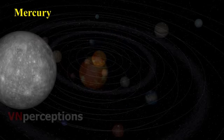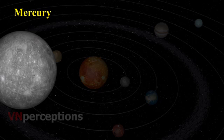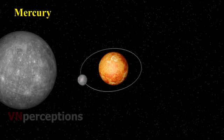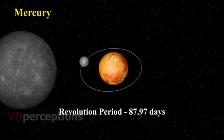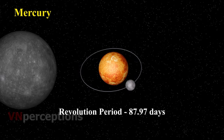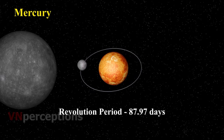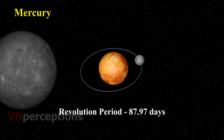Beginning with the first planet, that is Mercury. The planet Mercury is the nearest to the sun. It is the smallest planet of our solar system. Its orbit around the sun takes only 87.97 days, the shortest of all the planets in the solar system. Because Mercury is very close to the sun, it is very difficult to observe it as most of the time it is hidden in the glare of the sun.